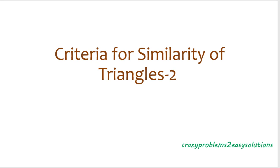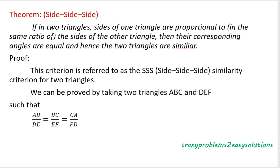We have two more theorems to see now. Theorem one: in two triangles, if the sides of one triangle are proportional to the sides of the other triangle, then their corresponding angles are equal, and hence the two triangles are similar.